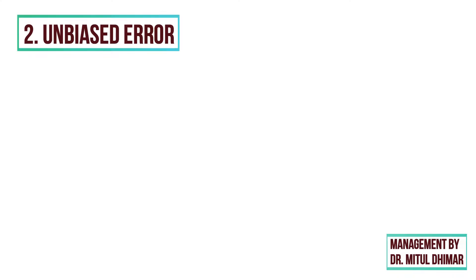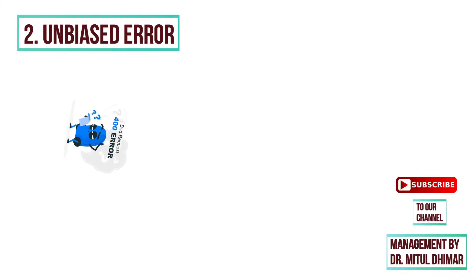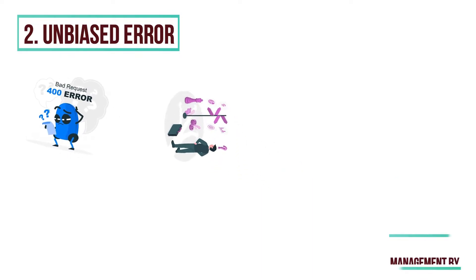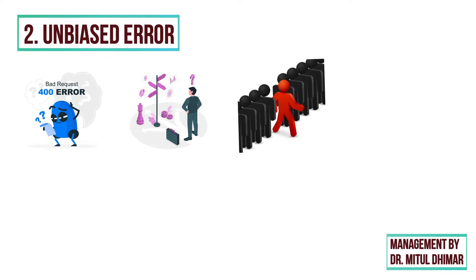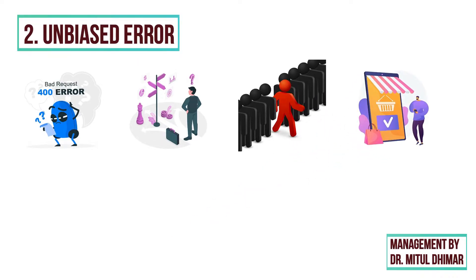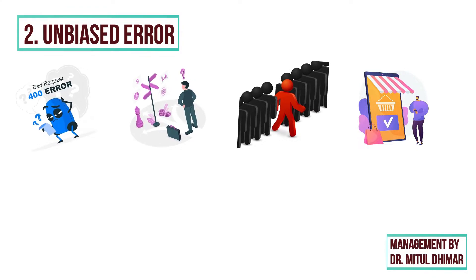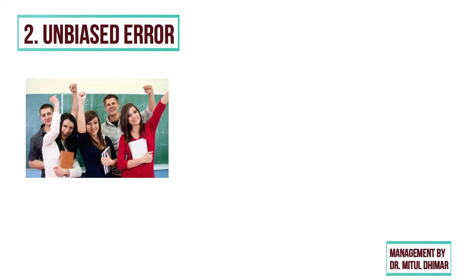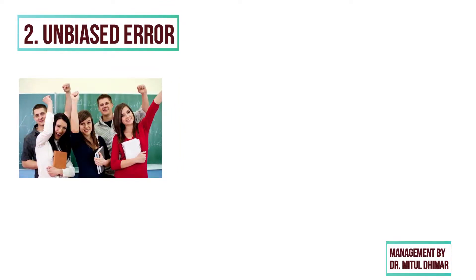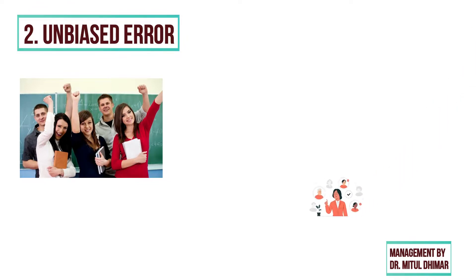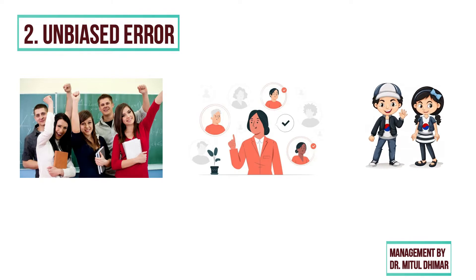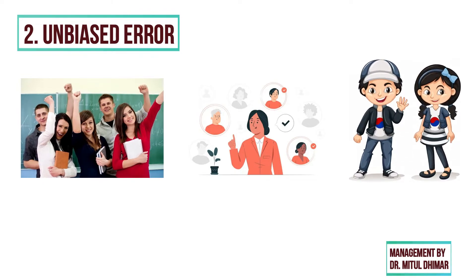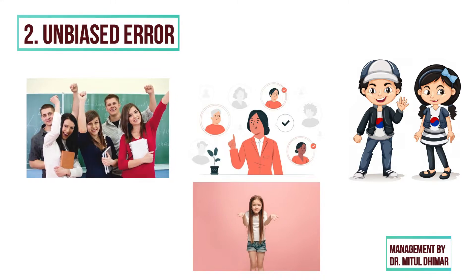Number 2: unbiased error. Unbiased errors are those errors that arise not because of personal judgment but because of a problem in determining samples — that is, the difference between the items that are included for the sampling purpose and items that are not included. For example, we prepare a sheet of 50 students with a 25-25 girl-boy ratio. Now we have to select 20 students, and when we pick 20 sheets randomly, it contains names of only boys or only girls. It creates an error, but it is unintentional.